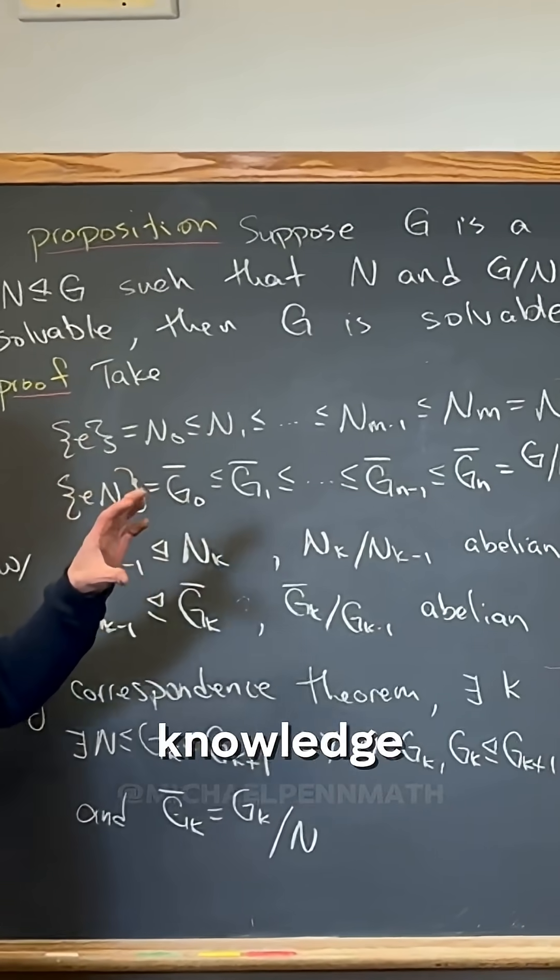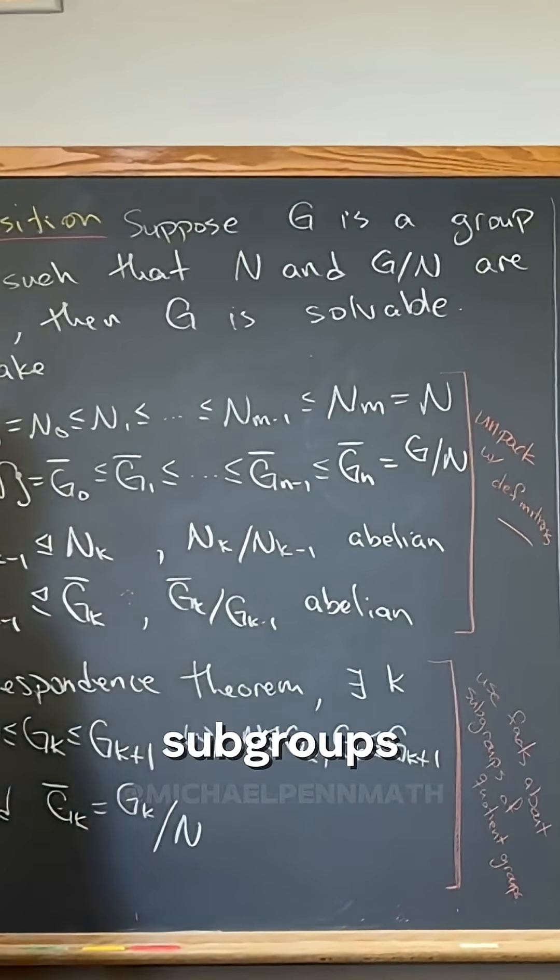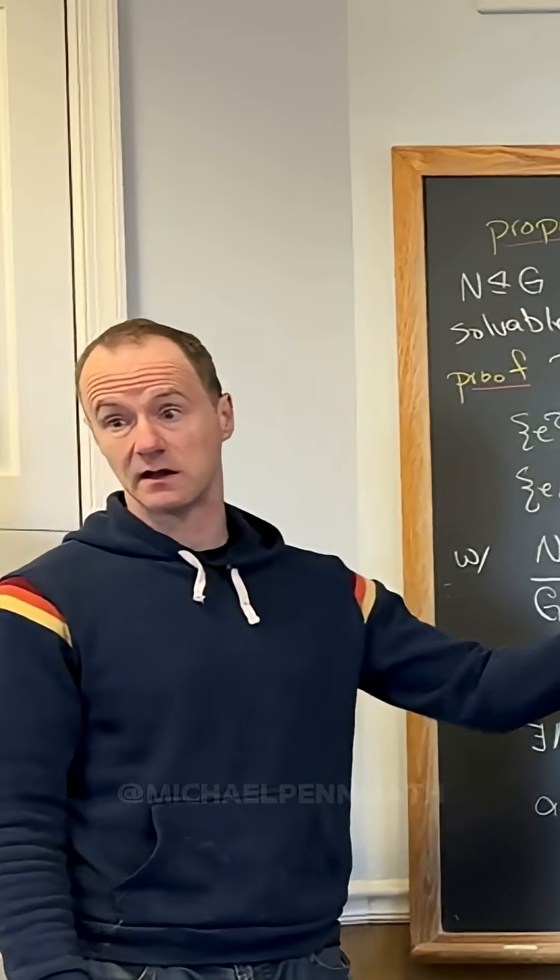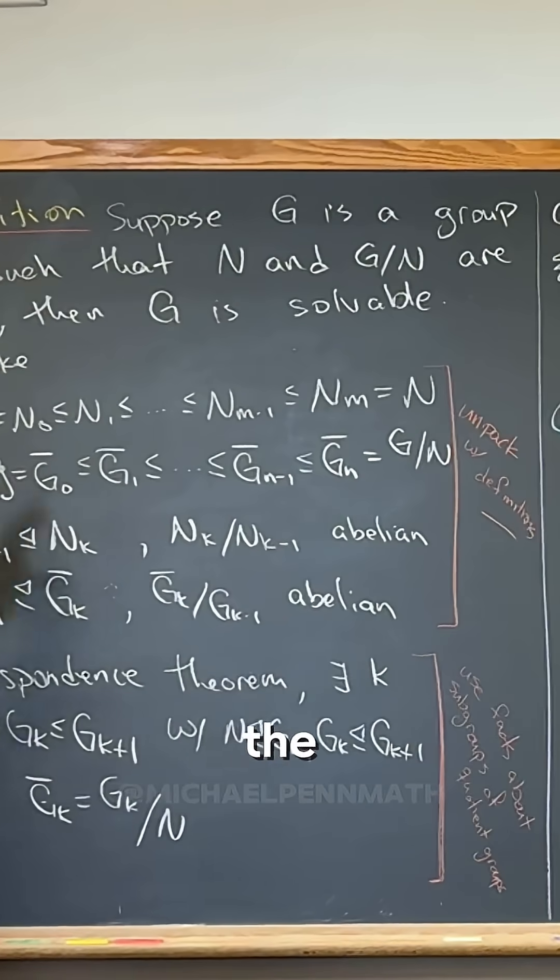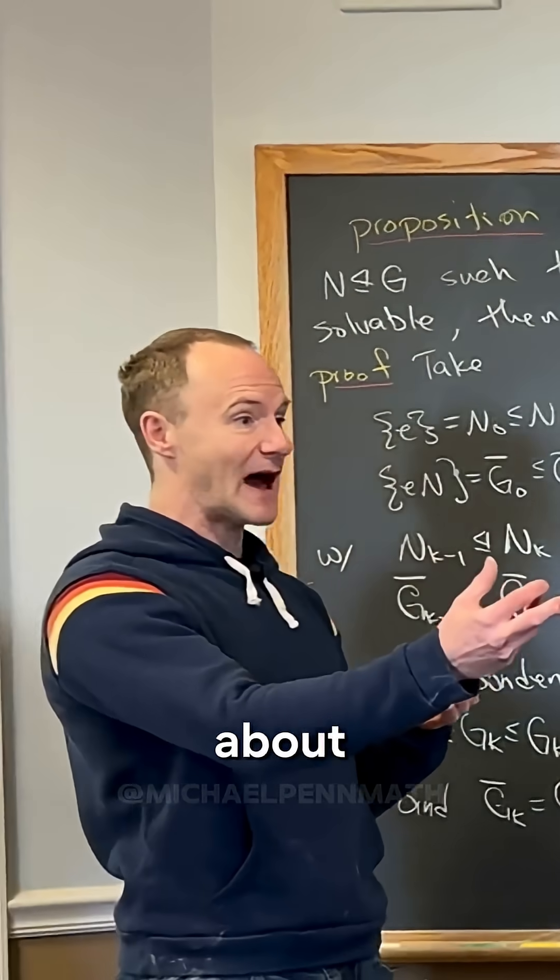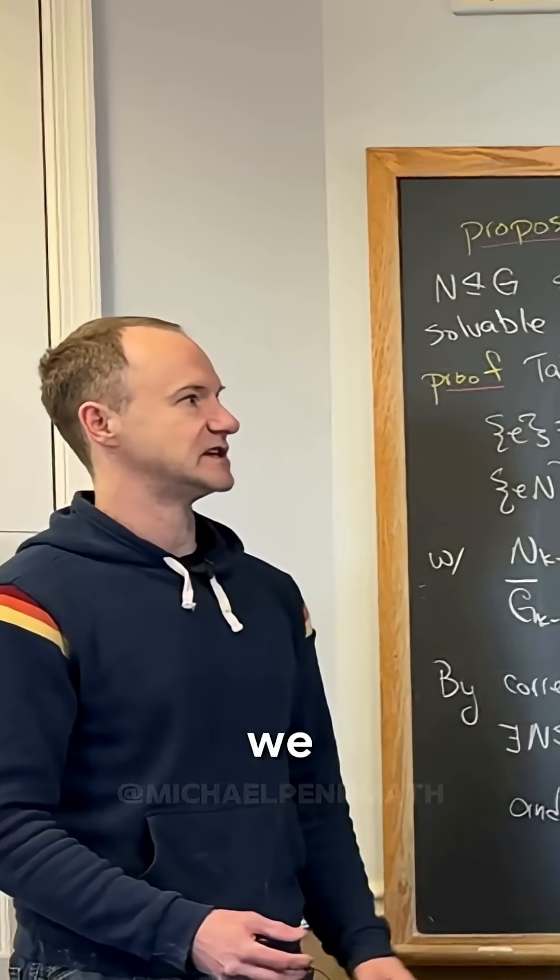What we're given is some knowledge about subgroups of N and subgroups of the quotient, but we need to know about subgroups of G that are bigger than N. That's what we do out of the quotient. Subgroups of the quotient tell us about subgroups of G bigger than N.